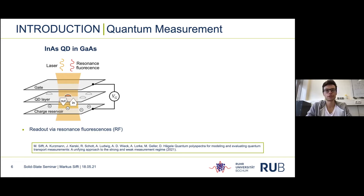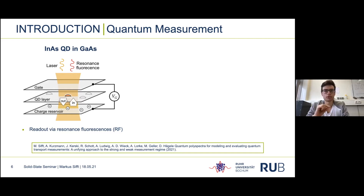The self-assembled quantum dots used in our paper can be described in a similar way; however, the measurement is performed optically. Because there are many dots in one layer, a laser is focused on one of the dots and tuned to the frequency of an exciton transition, so the laser can generate electron-hole pairs within the dot which quickly annihilate, sending out a photon called the resonance fluorescence signal captured by fast photodetectors. The key is that the exciton transition frequency shifts as soon as an electron enters the dot, and the photodetector will stop clicking.